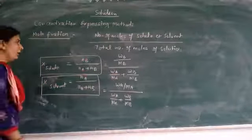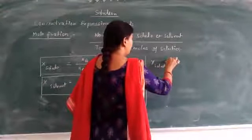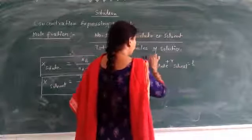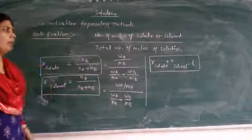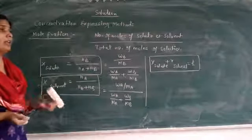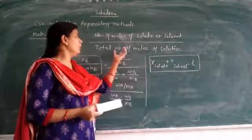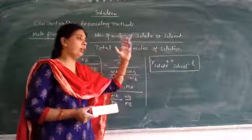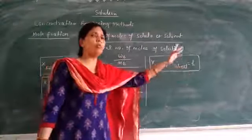One important property: the mole fraction of solute plus mole fraction of solvent is always equal to 1. So mole fraction is defined as the ratio of the number of moles of one component to the total number of moles of solution, that is solute plus solvent, denoted by x, and the sum of mole fractions of solute and solvent always equals 1.